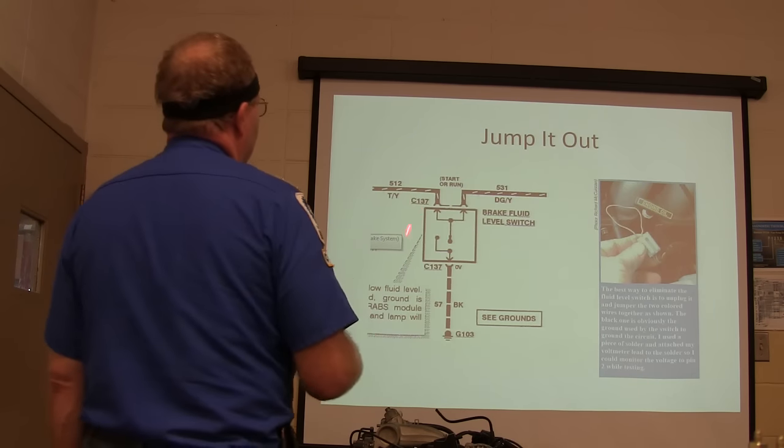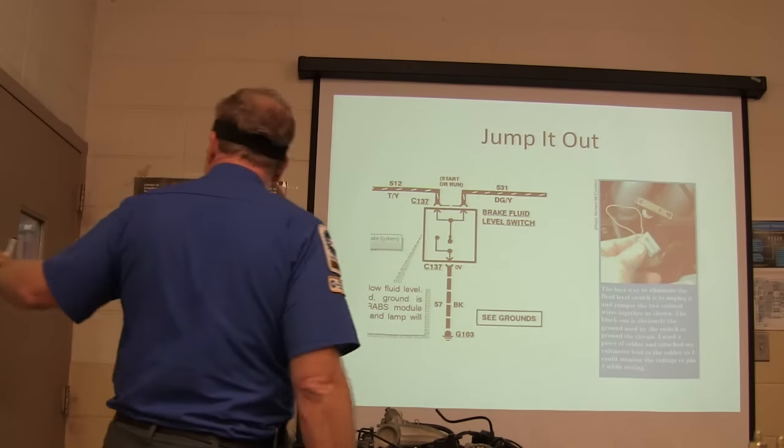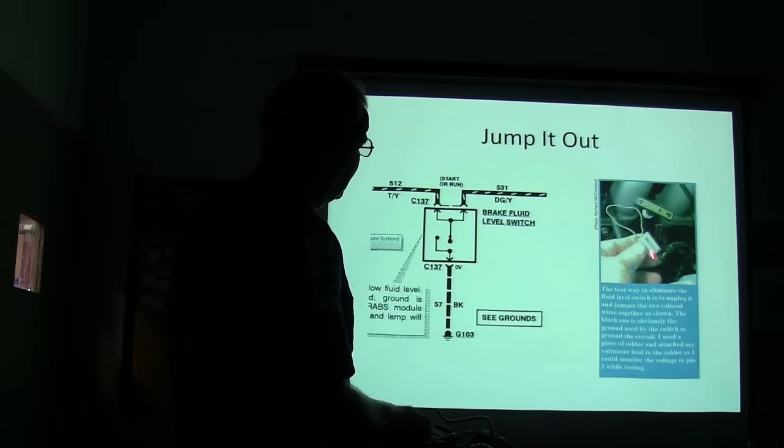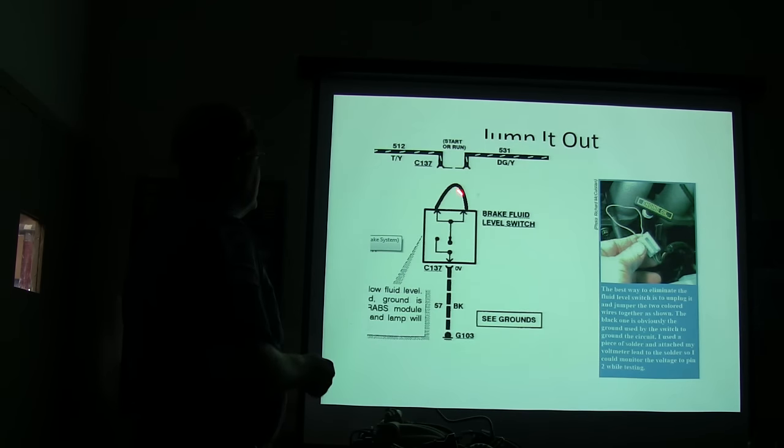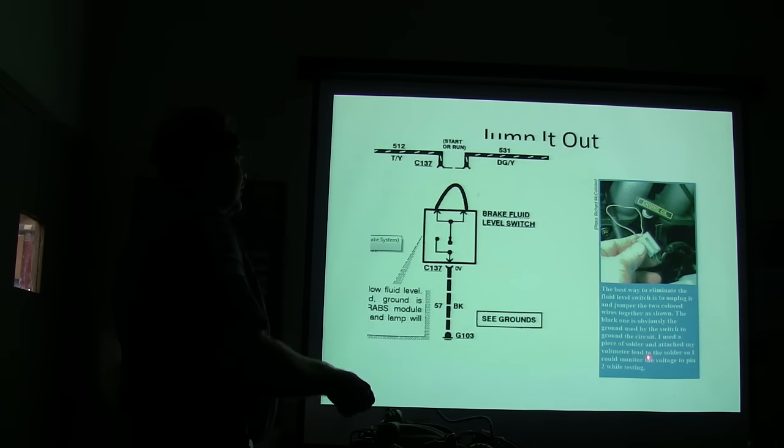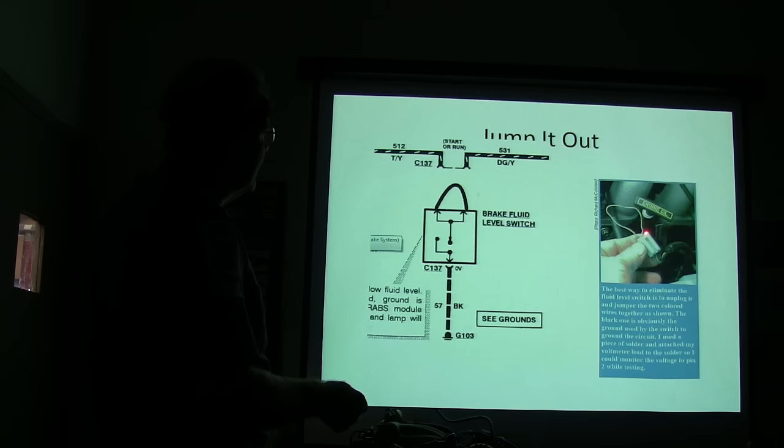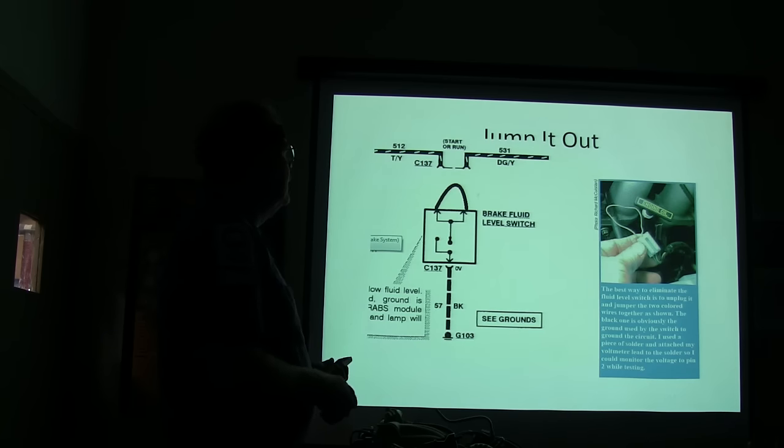All right. Now we've got the brake fluid level switch. We're looking a little bit closer here. What I used to do to see if it was a reservoir, you see the two colored wires right here? I just got a little piece of solder, and I made a little jumper, and I jumped them just like that. So when you jump those so that that can go on through, you've taken the ground out of the loop anyway. Basically, if you just jump it out, see the ground, even if it's grounded, it's not going to be able to make a connection through here. And the black one is the ground, the switch, you've got to switch the ground circuit. Use a piece of solder, attach the voltmeter lead to the solder. You can monitor the voltage to pin two while you're testing. Voltmeter's what you've got to use because the test lamp will not burn on that.